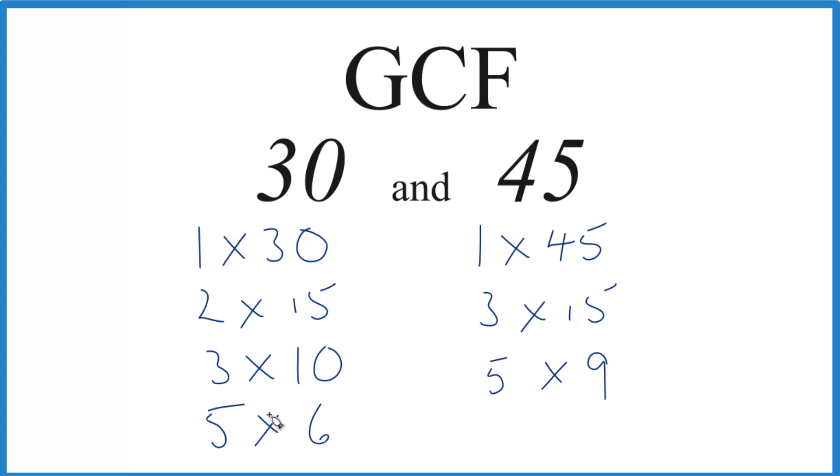So now that we have the factors of 30 and 45, we can compare them and find the greatest common factor. So 1, that's a common factor between 30 and 45, but do we have something greater?